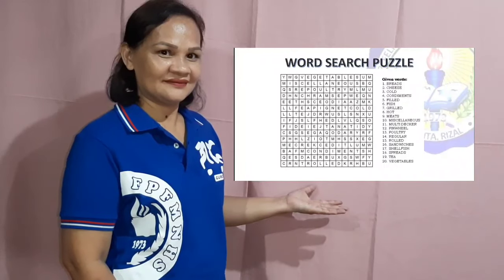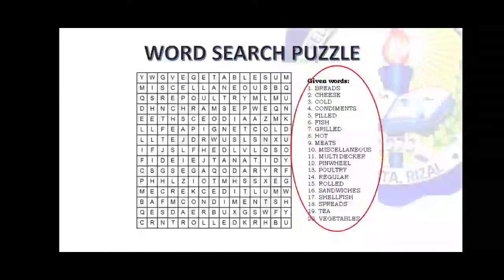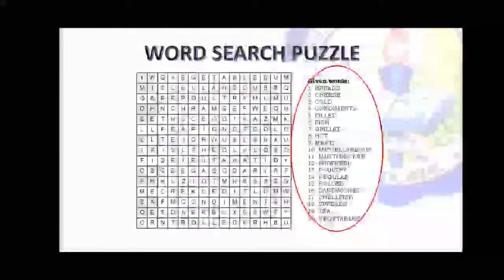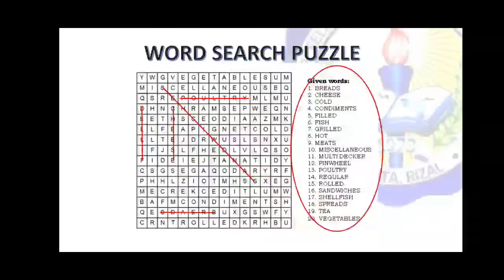For your warm-up activity, answer the word search puzzle on page three of the Quarter 3 Cookery 9 Learner's Packet. These are the given words that you need to locate in the grid. You can mark them horizontally from left to right or right to left, vertically downward or upward, and diagonally.